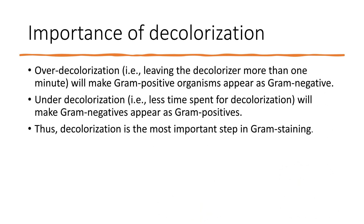It is very important to understand that decolorization is the most important step in gram staining. If you over-decolorize — that is, if you leave the decolorizer for more than one minute, remembering the duration is 45 seconds to one minute — it will result in gram positive organisms even appearing gram negative. Under-decolorization means leaving the decolorizer less than the minimum 45 seconds, which will make gram negative bacteria look like gram positives. That is why decolorization is the most important step.